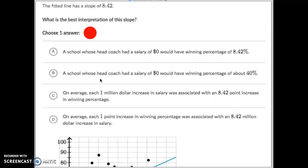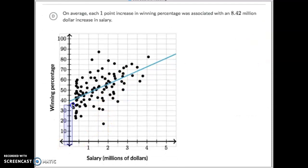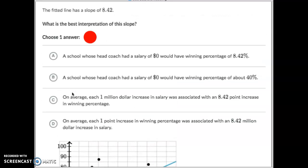So let's look at which one of these represents that. A school whose head coach has a salary of zero would have a winning percentage of 8.42. Well, first of all, that's not true. If you paid them zero, we already determined you would have a winning percentage of 40. But that's the y-intercept, and we don't care about that.